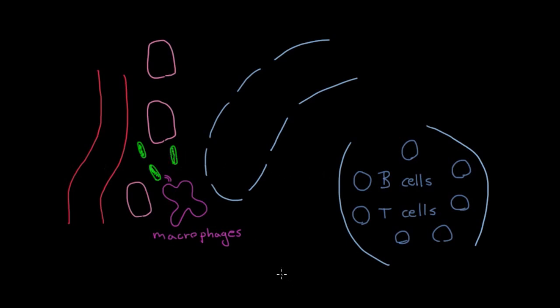But now we're faced with the problem because we've already said that these bacteria stay here in the tissues. They're not swept into the blood and then carried to the B and T cells over there. They stay in the tissues. And these B and T cells are not out there in the tissues. So how can we get these B and T cells to see these bacteria and be able to react against them?